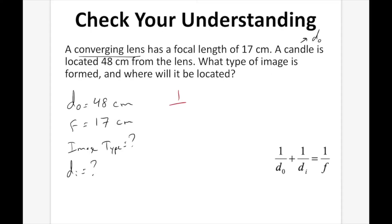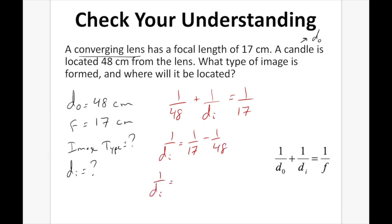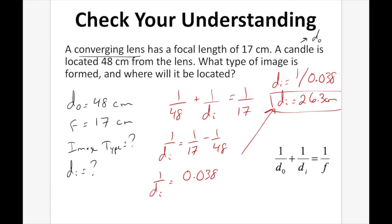Plugging our numbers in: 1 over 48 plus 1 over DI equals 1 over 17. Rearranging: 1 over DI equals 1 over 17 minus 1 over 48, which gives 1 over DI equal to 0.038. So DI equals 1 divided by 0.038, giving DI equal to 26.3 cm. Since we have a positive DI value, it's a real image, located 26.3 cm on the other side of the lens.